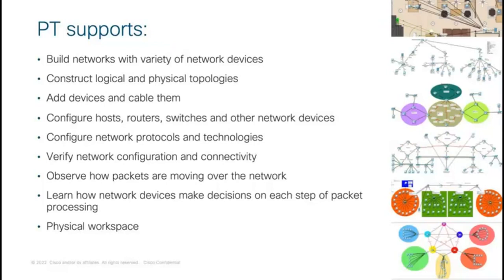In Packet Tracer, you can create topologies with 100-plus devices, and they remain functional. You can configure devices with quite sophisticated configurations — not just basic IP addressing and DHCP. Many things are supported, including network services like IPTV, telephony with simulated Cisco IP phones, wireless technologies including 3G/4G and cell towers. You can build whatever you want and play with whatever kind of technology.